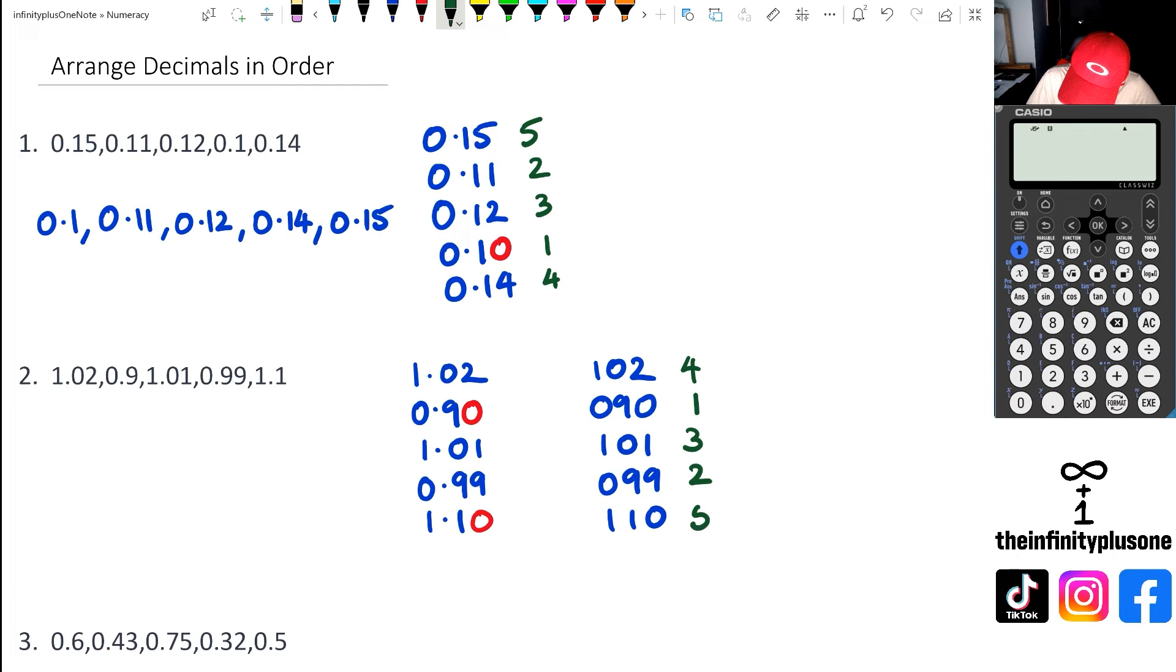Because those numbers without the decimal place are ordered in that way, when you do put the decimal places back, the order still remains the same. So my first number in question 2 in order is 0.9, then 0.99, then 1.01, then 1.02, and finally 1.1.